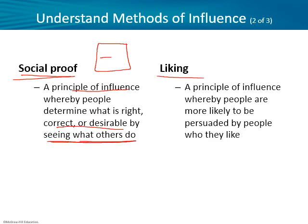Liking is a principle of influence whereby people are more likely to be persuaded by people who they like — and I'd add people who are like them. It's not just people they like, but people who seem similar to them. That's a lot more influential than if you feel like this person doesn't get you. A classic example is kids and parents: once kids get to a certain age, they no longer see their parents as people they like or want to be like, so they look for somebody else to be their role model.